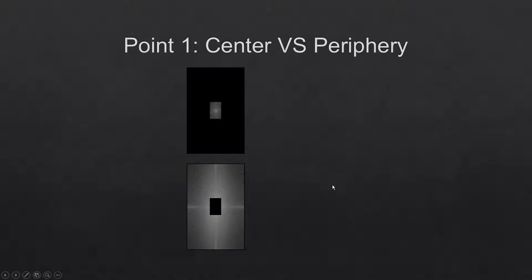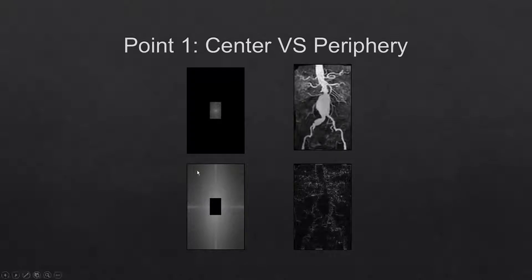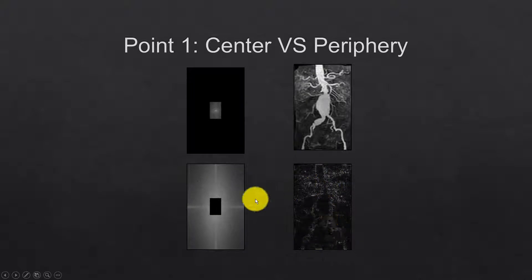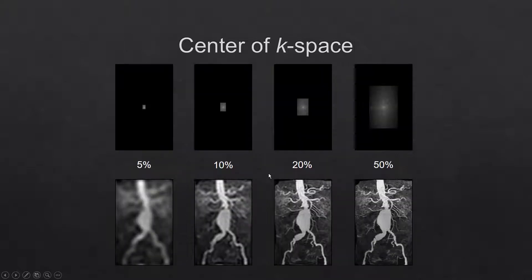But when we apply this to angiograms, its importance is slightly more obvious. You can see here we have contrast because we have the center of k-space, and here we have very little contrast but edge definition, because we have the periphery. So as the periphery of k-space is added, there is increased detail of the vessel wall.